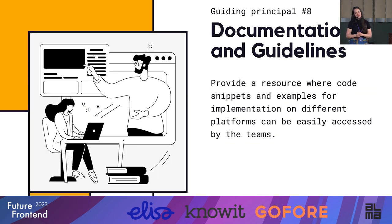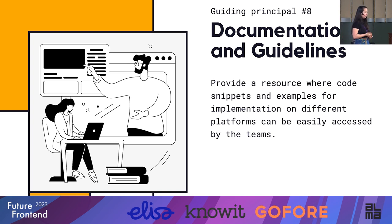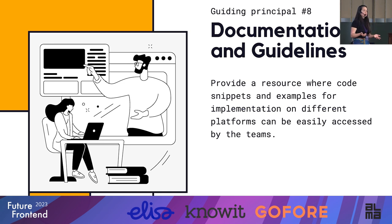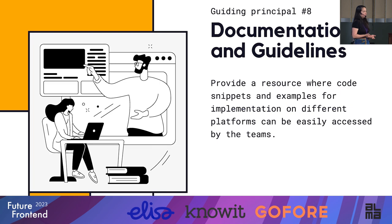Guiding principle number eight: documentation and guidelines. You could say that having design tokens and components is having a design system — but I would say that's just a library. To have a design system, you need documentation and guidelines. Provide resources where code snippets and implementation examples for different platforms can be easily accessed by the teams. It usually means making that available on a separate website — you need a whole infrastructure, and hopefully a design system team to set it up. Having documentation guidelines is what emphasizes the need to reuse components. It will still happen that designers recreate what should have been a component, and developers recreate that piece of code — but foster the idea of reading the guidelines.